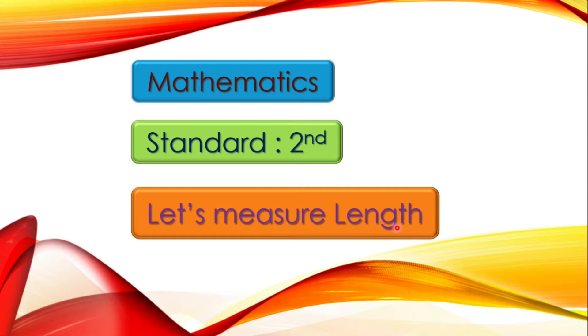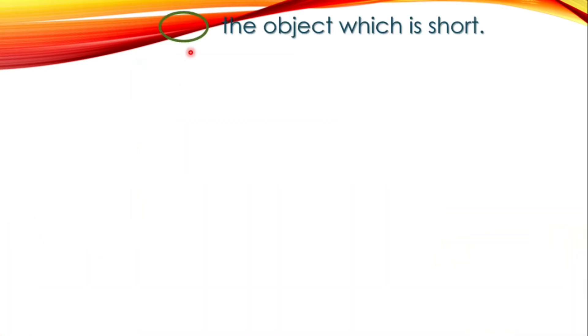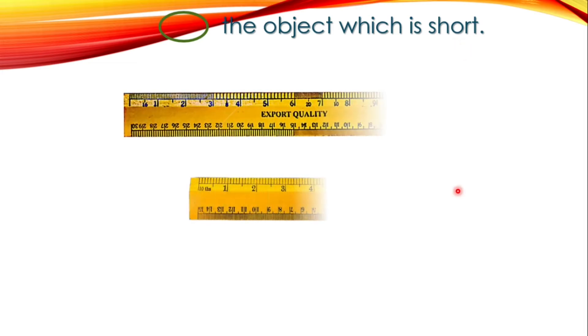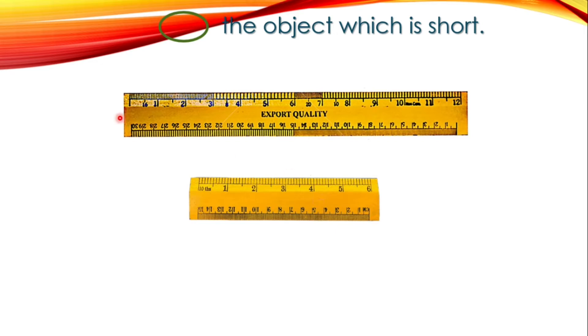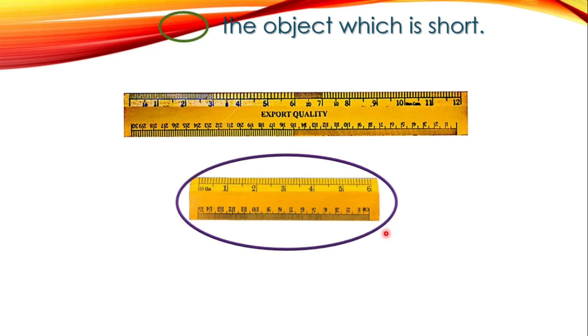Before today's portion, we'll review some content from standard first. Circle the object which is short. Here you can see two scales — one is small and one is long. Which one do we circle? This one, because it is short in length.